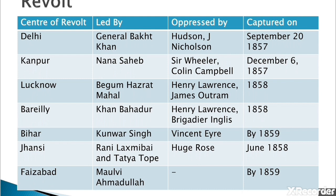At Lucknow, Begum Hazrat Mahal took over the reins, where the rebellion broke out on June 4, 1857. Her son Birjis Qadir was proclaimed the Nawab, and regular administration was organized with important offices shared equally between Muslims and Hindus. At Bareilly, Khan Bahadur, a descendant of the former ruler of Rohilkhand, was placed in command. He organized an army of 40,000 soldiers and offered stiff resistance to the British. At Bihar, the revolt was led by Kunwar Singh, the zamindar of Jagdishpur — an old man in his 70s with a grudge against the British who had deprived him of his estate. He enthusiastically joined the sepoys when they arrived at Arrah from Danapur.